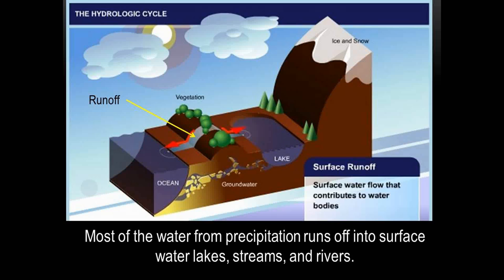Most of the water from precipitation runs off into surface water, lakes, streams, and rivers.